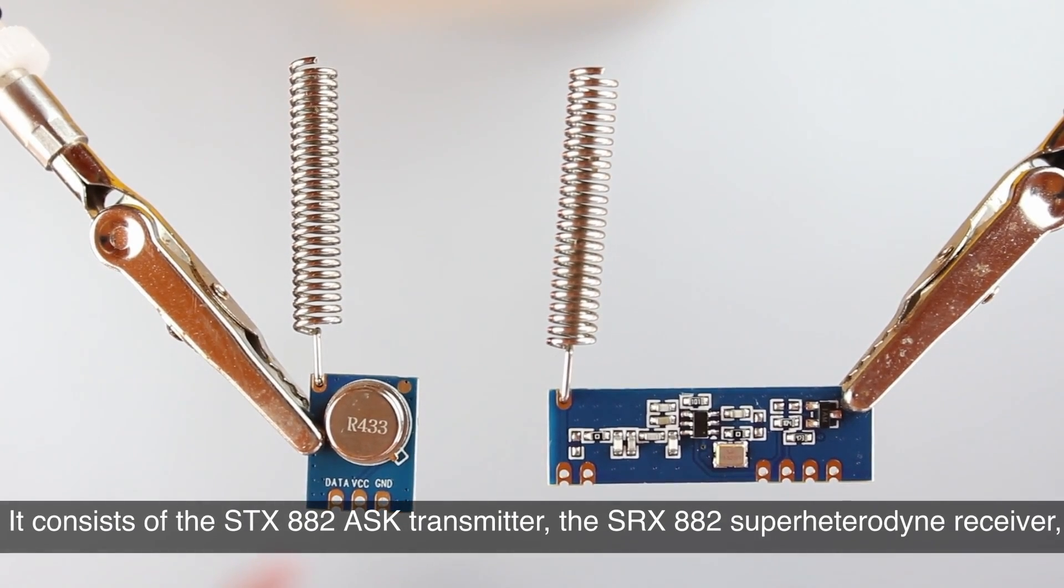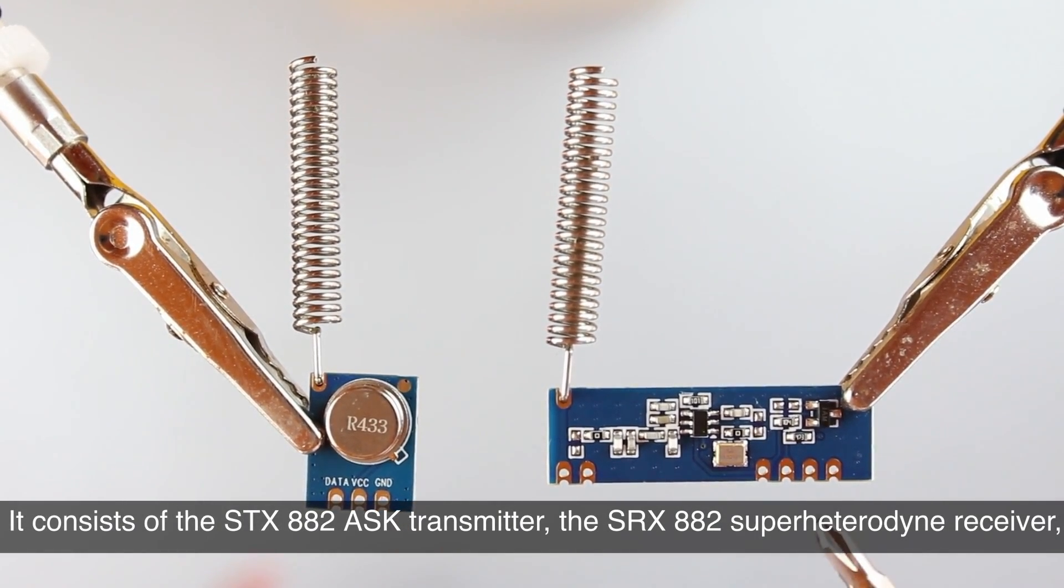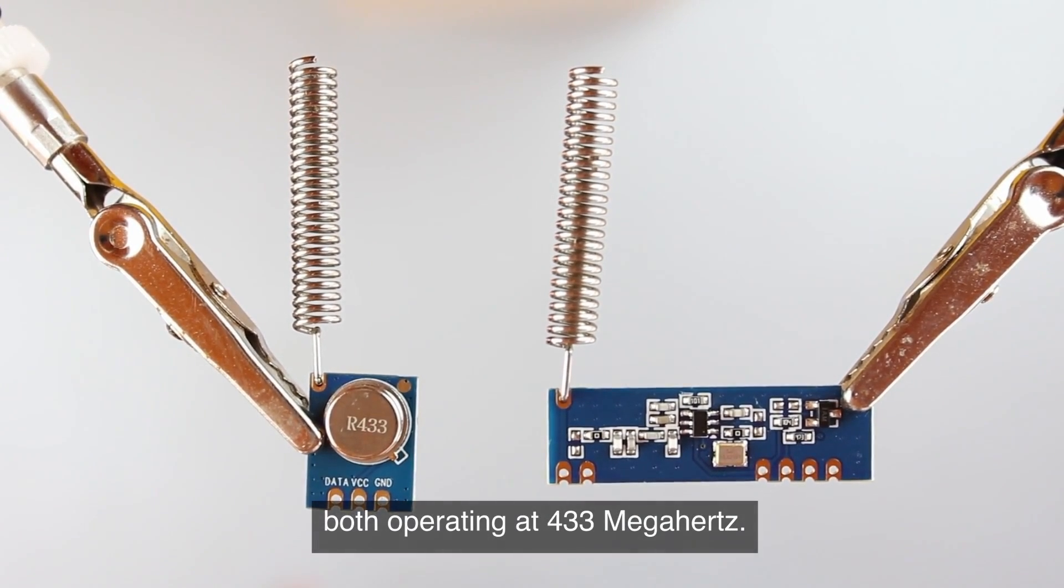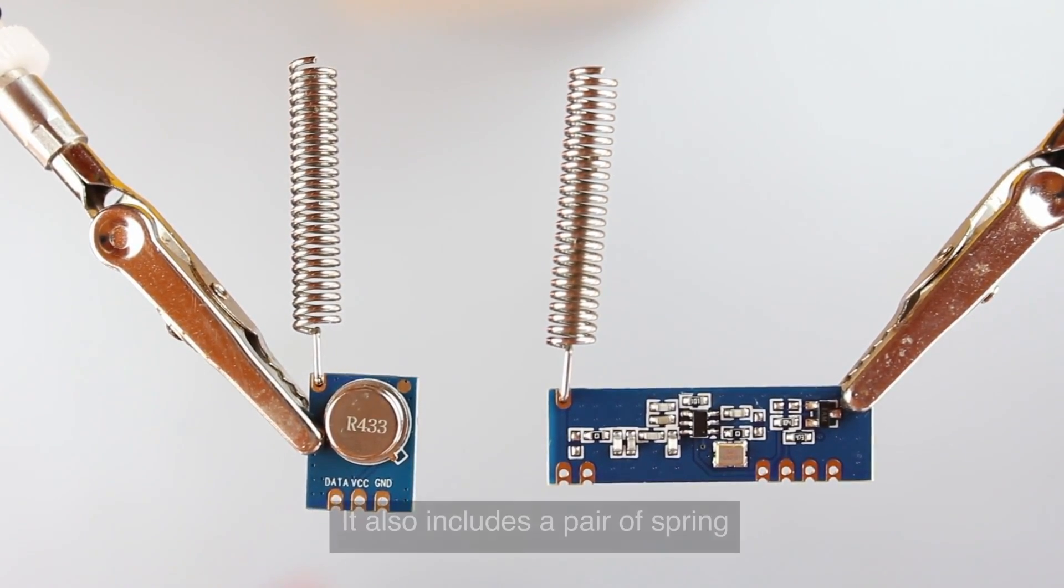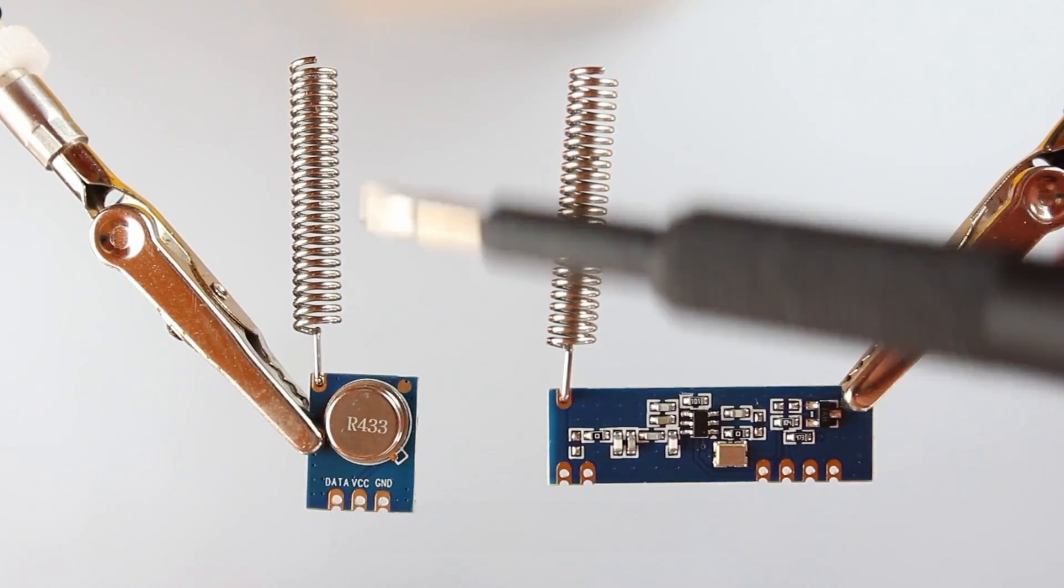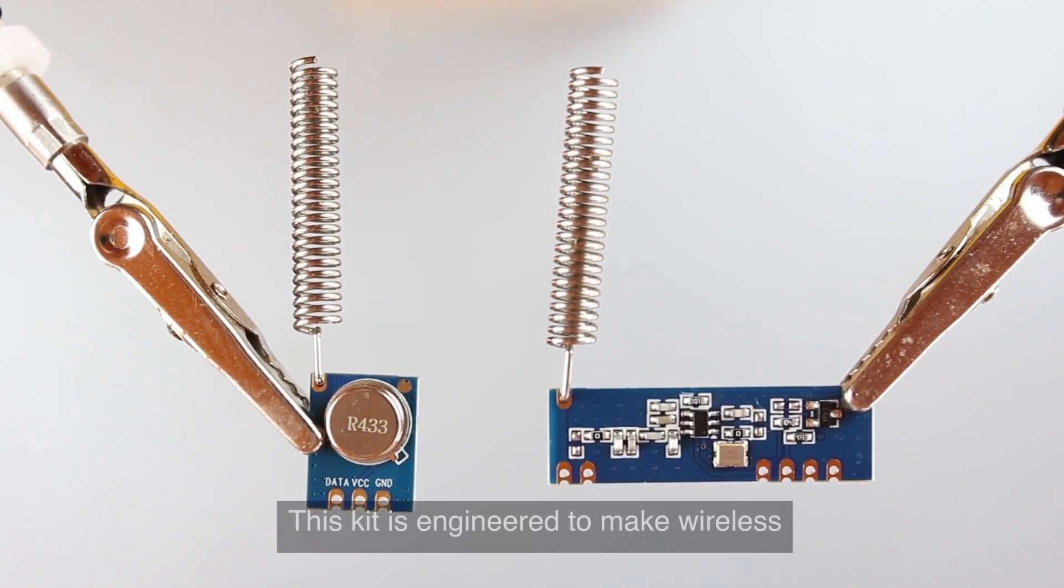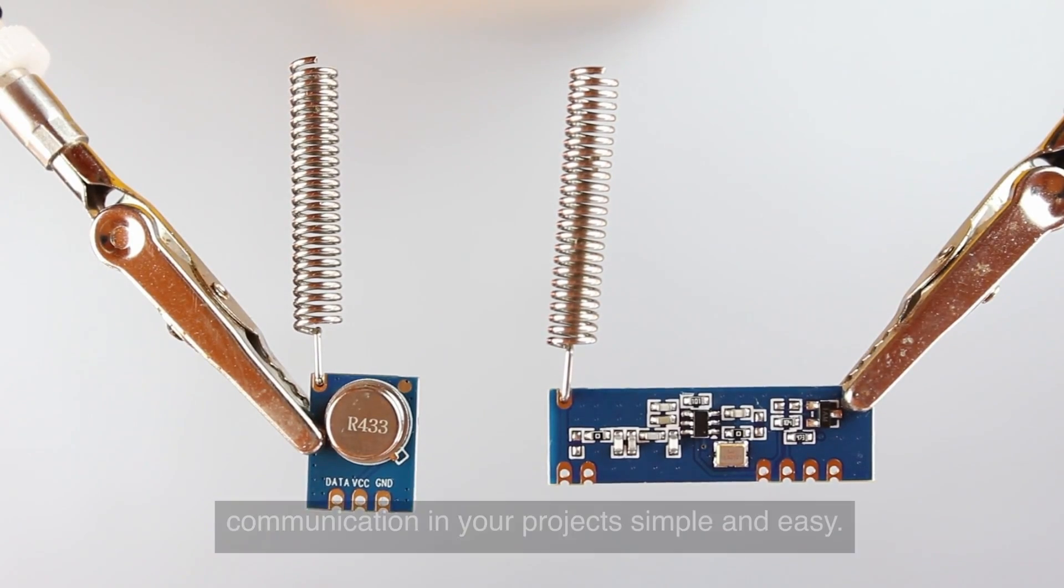It consists of the STX882-ASK Transmitter, the SRX882 Super Header 9 Receiver, both operating at 433 MHz. It also includes a pair of spring antennas, one for each the transmitter and the receiver. This kit is engineered to make wireless communication in your projects simple and easy.